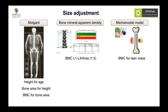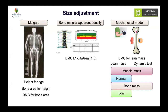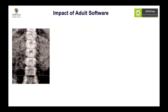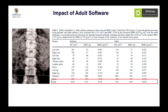Another approach examines the muscle-bone interaction: BMC for lean mass tells you whether lean mass is compromised and whether the bone deficit is primary or secondary. If muscle mass is normal but bone is low, it is a primary bone problem; if muscle mass is also low, it is a secondary problem. If adult software is used, the higher threshold means less area is classified as bone, resulting in a falsely elevated bone density — do not use adult software.